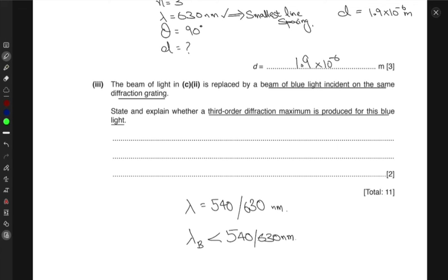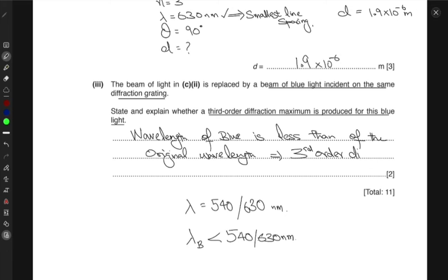So the third order diffraction can still be produced because we are still under the limit of the original wavelengths. And the original wavelengths were capable of producing a third order diffraction maxima. So hence, if blue light is under those wavelengths, then it will also be able to produce the third order diffraction maxima. So you say that the wavelength of blue light is less than the original wavelengths. Hence, a third order diffraction maxima is observed.